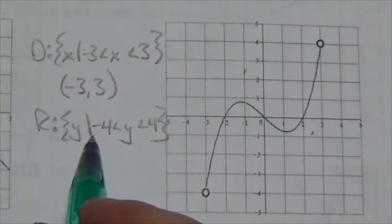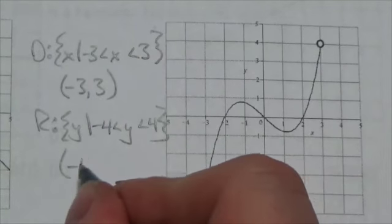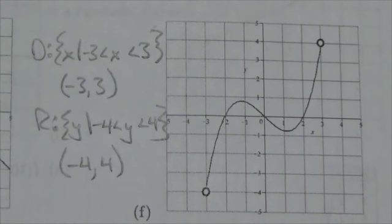So, I would write it like this. Negative 4 is less than y is less than 4. And in interval notation, that would be negative 4, comma 4. Again, with soft brackets to indicate that we're not including the endpoints. So, I'll see you next time.